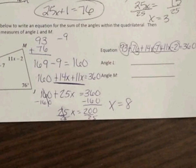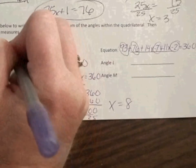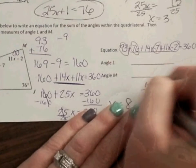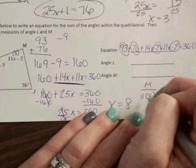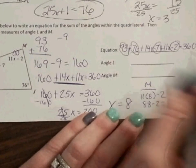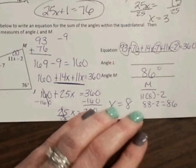So it did not want to know what x equals, but we had to do it in order to find the angle L and M. So now angle M is right here. So I'm going to go and I'm going to plug the 8 in there. So I'm going to come over here. I'm going to show my work. So I have 11 times 8 minus 2, which is 88 minus 2, which gives me 86. So the measure of angle M is 86 degrees.